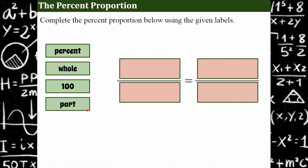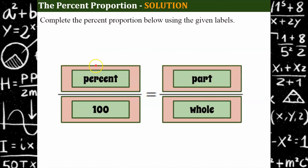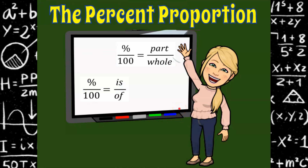Let's see how you did. Can you create the percent proportion using these four pieces yourself without looking back? You should have: percent over 100 is equal to part over whole. That's our percent proportion. I hope you enjoyed this lesson today and found it helpful. Please subscribe to my channel, give me a thumbs up if you enjoyed today's lesson. Have a great day.